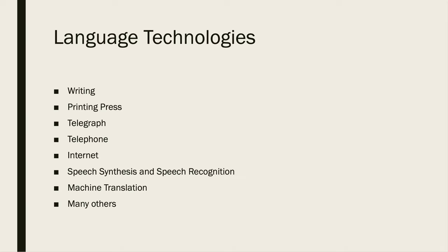When we talk about language technologies, there's a broad range of technologies that might apply. In general, we'll be looking at writing systems — mechanisms and techniques for taking the spoken word, which is an auditory medium, and constructing tools and techniques for writing those thoughts and sentences down. This goes from clay and stylus, through pen and paper, through the printing press, and then to other forms of technology that allow language to be transmitted over a distance, beginning with the telegraph, the telephone, and today, the internet.